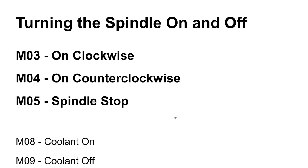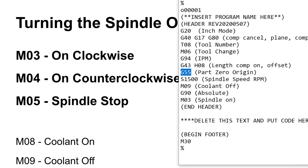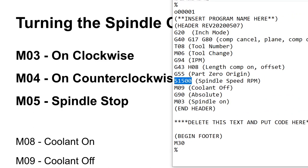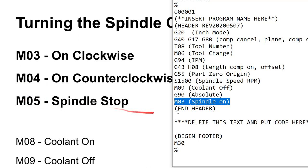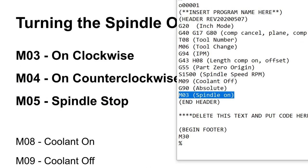Somewhere along the line we've got to set the spindle speed. That's done with the S address and a number — S1500 sets the spindle to 1500 RPM. It will not turn the spindle on, however. The spindle doesn't come on until we hit M03, which turns the spindle on clockwise. We can reverse it with M04 and turn it off with M05.